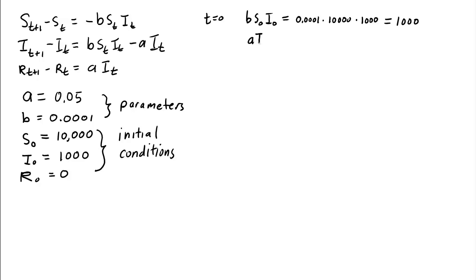A times I0 is the number of infected individuals that get removed. And that is, well, A is 0.05 and I0 is 1,000. So that gives us that only 50 individuals recover in the first time step.